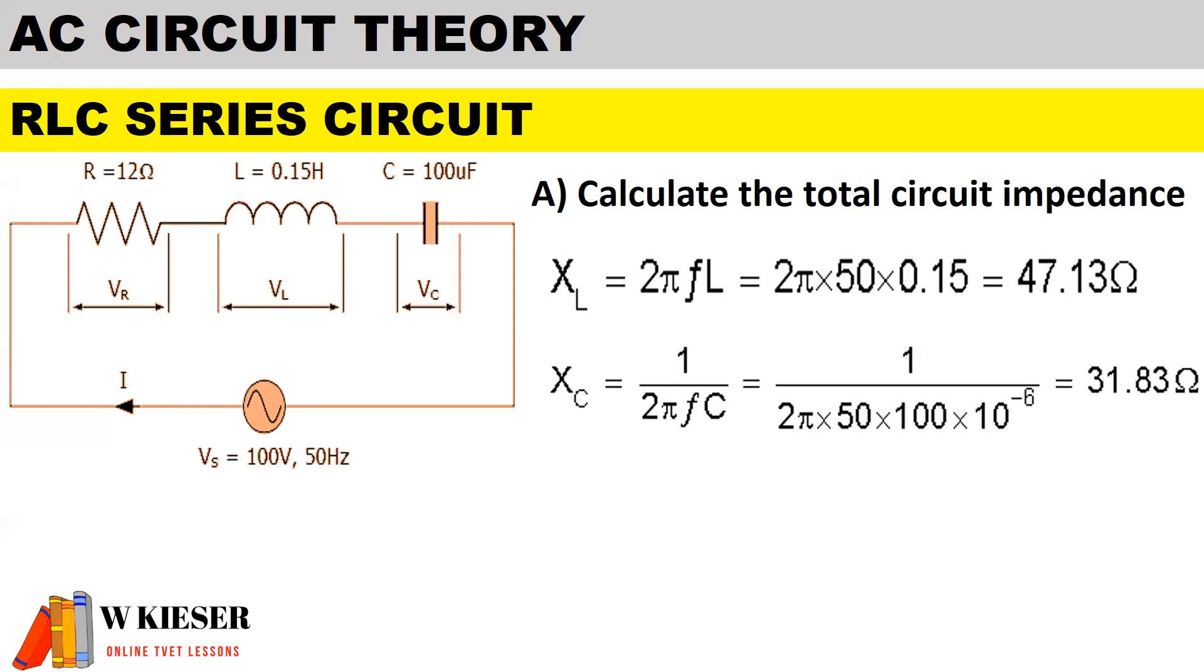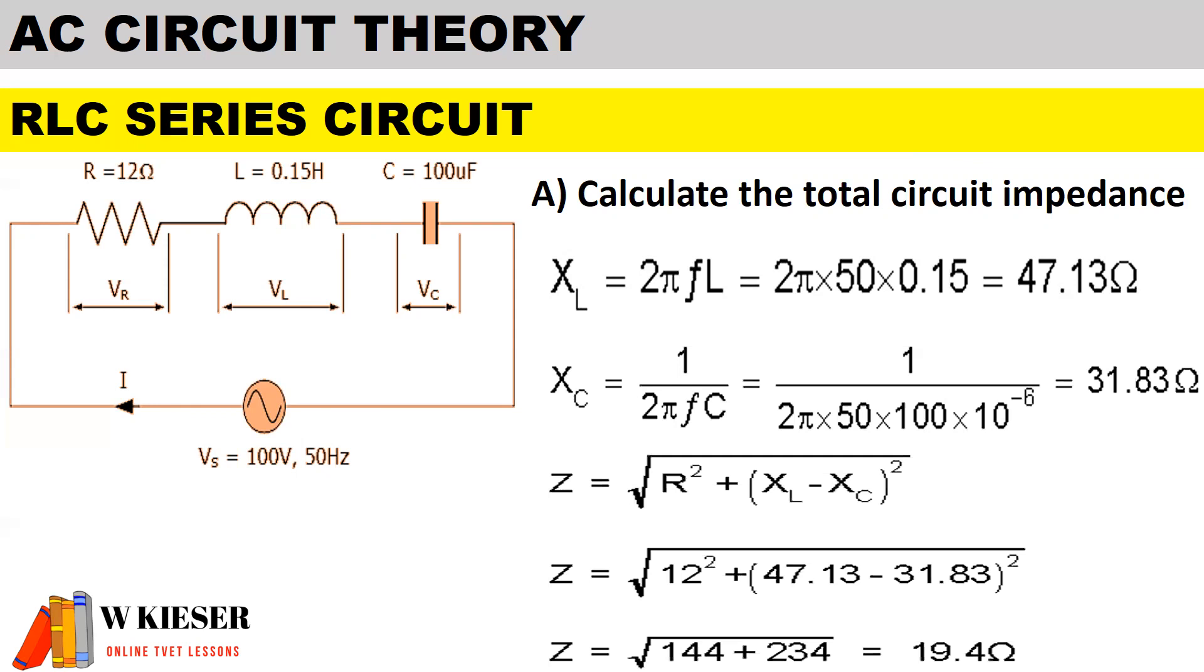Now XL is bigger, so this means it's a mainly inductive circuit. So therefore when we calculate the impedance will be XL minus Xc. When we substitute all the values into the formula, we end up with an impedance total of 19.4 ohms.